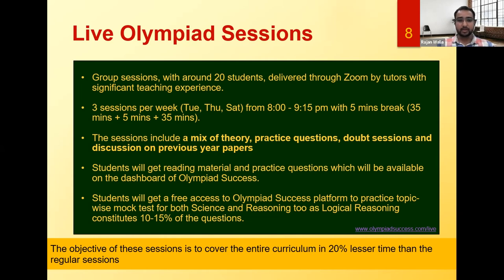Many students at Olympiad Success got international rank one for session 2021-22. Now about this course: it is an accelerated course. The objective is to cover the entire curriculum in 20% lesser time — we've decreased the number of sessions by 20%, and the fee accordingly. This is a group session with around 20 students conducted on the Zoom platform. There will be three sessions per week: Tuesday, Thursday, and Saturday, 8 PM to 9:15 PM, 75-minute classes. Sessions include a mix of theory, practice questions, doubt sessions, and discussion of previous year papers.